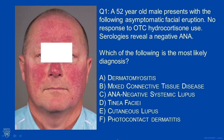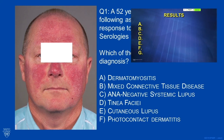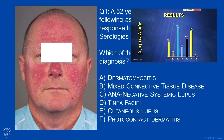So let's look at this question. It's a 52-year-old male who presents with the following asymptomatic facial eruption. He's used over-the-counter hydrocortisone, and he has a serology that reveals a negative ANA. What is the most likely diagnosis? It looks like most people are going with C, ANA-negative systemic lupus. So let's look at the answers — the point of this question is...